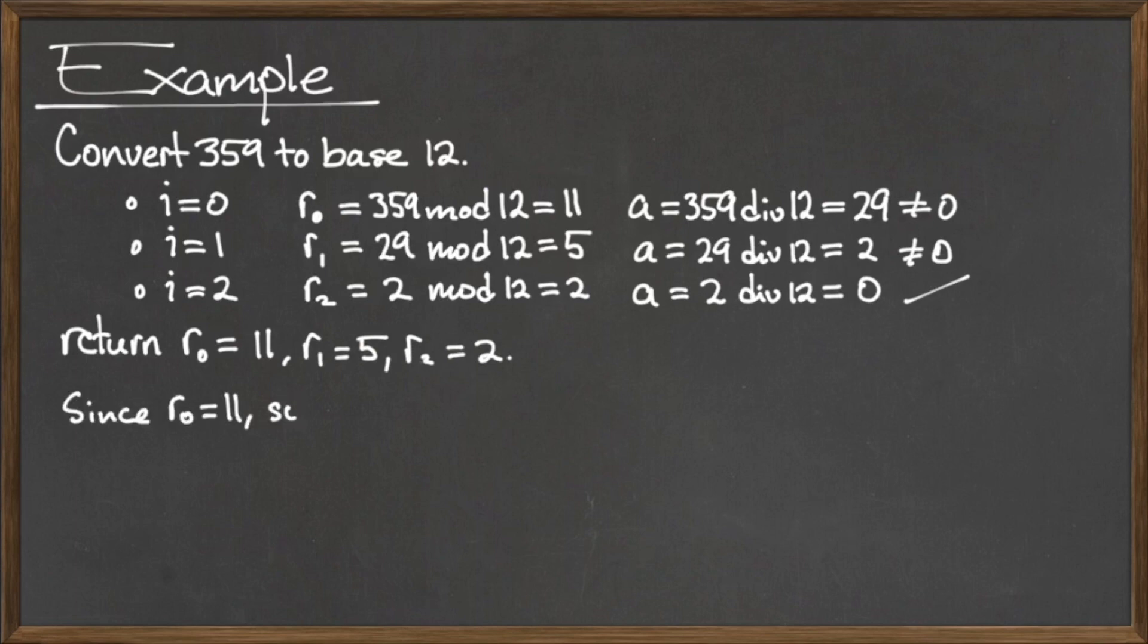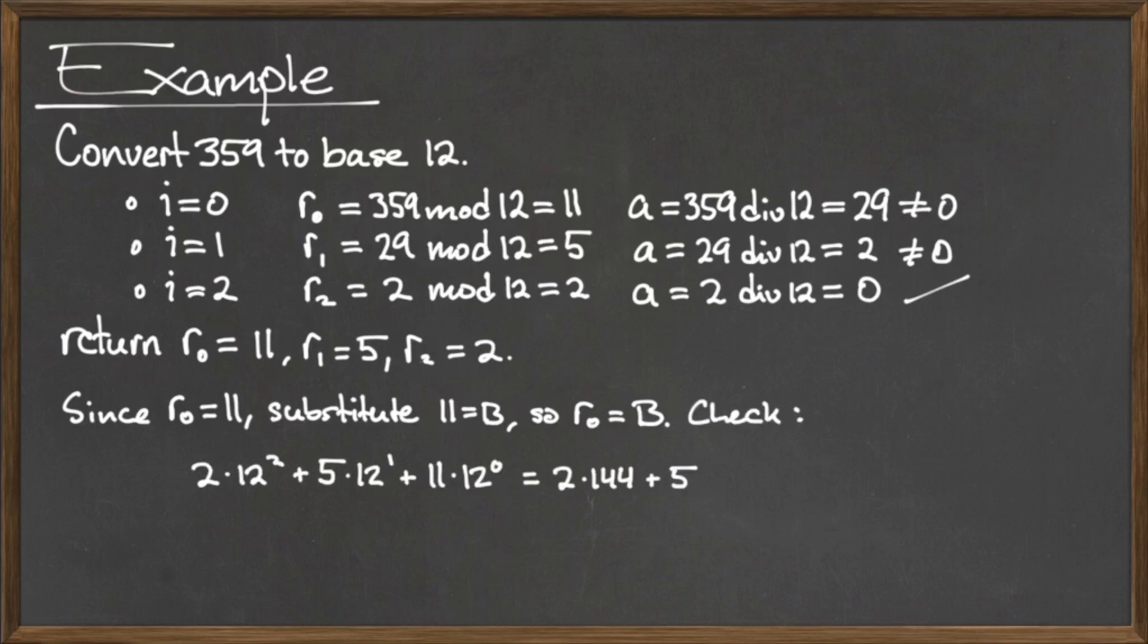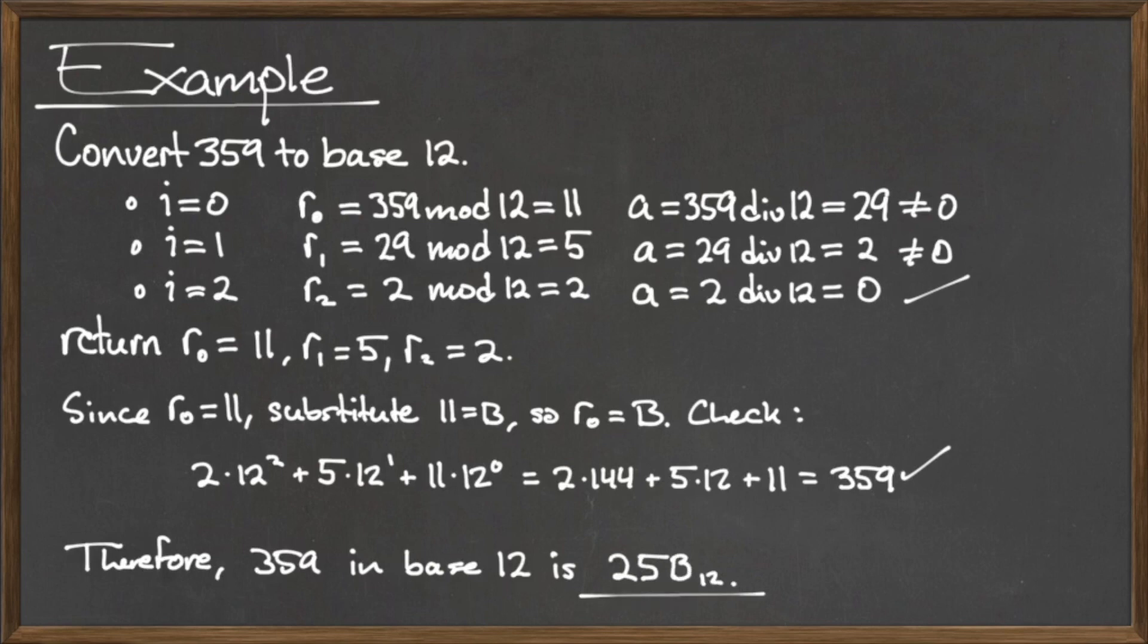Since r sub 0 is greater than 10, we replace the number 11 with the single digit capital B. Writing these numbers in reverse order, we see that the number 359 written in base 10 is equivalent to the base 12 number 25B.